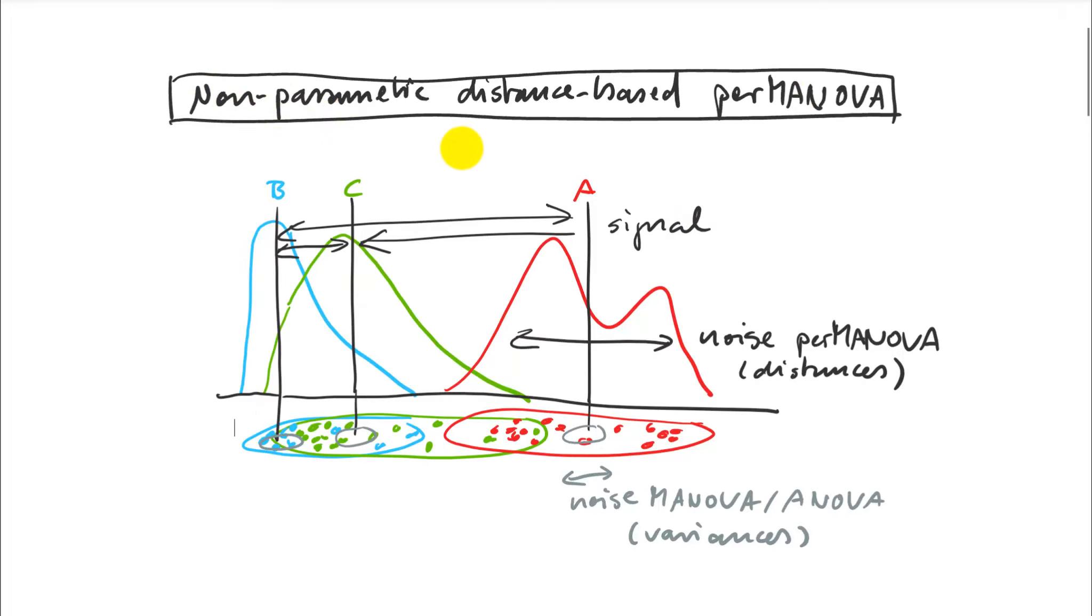Let's take a look at how this distance-based non-parametric PERMANOVA procedure works. It works a little bit differently than normal multivariate analysis of variance or ANOVA. I'm not working with the variances among the means and the variances within the means. I'm directly working with the data, and that has some advantages. I don't really care how my data is distributed. These distributions can be anything.